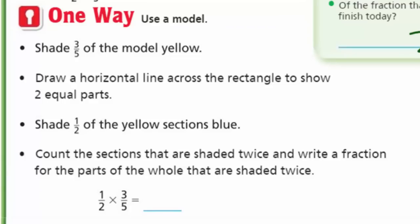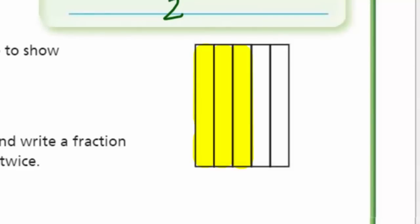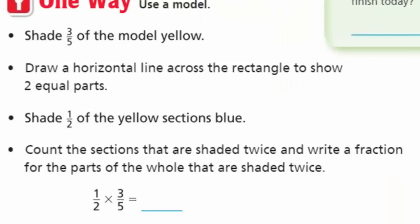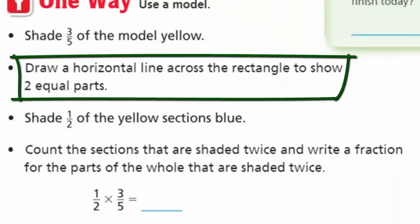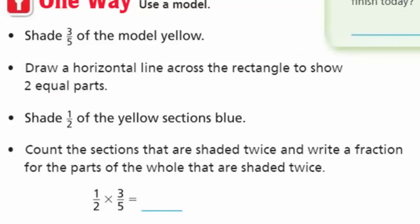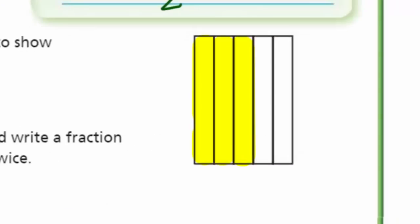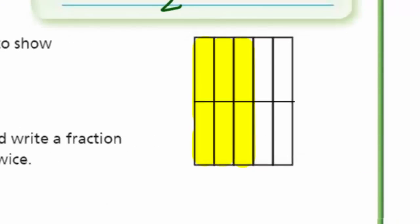It says shade three-fifths of the model yellow. I think we can do that. I say that's three-fifths because I see five equal pieces — the denominator is letting me know it's been divided into five equal pieces, and I have shaded three of them. Then it says draw a horizontal line across the rectangle to show two equal parts. We're looking for two equal parts because of our one-half. I would say that looks about one half.